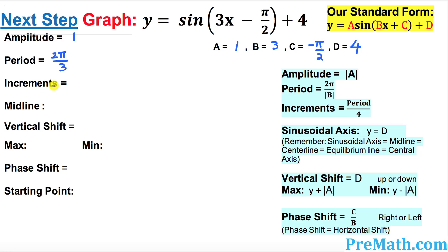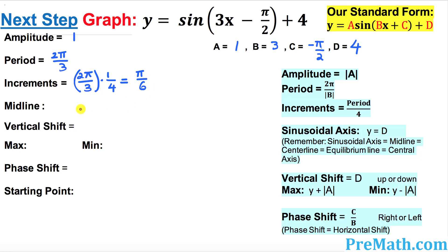Now we want to find the increment. The increment is nothing more than the period divided by four. So two pi over three divided by four is the same as multiplying by one fourth, which simplifies to pi over six. This is our increment.